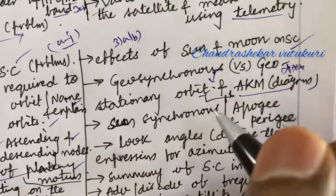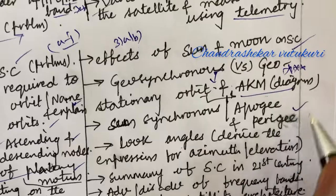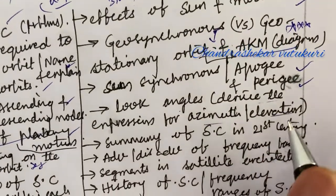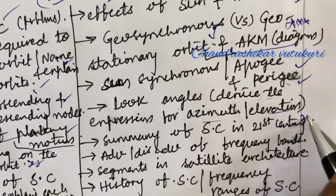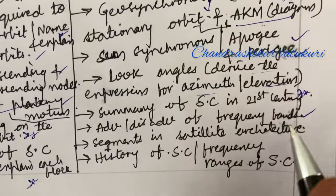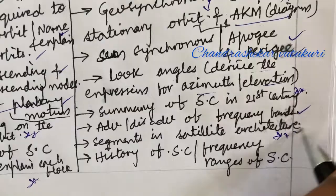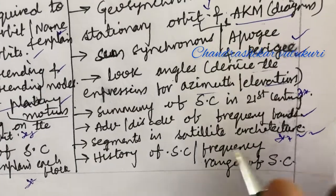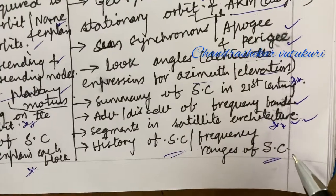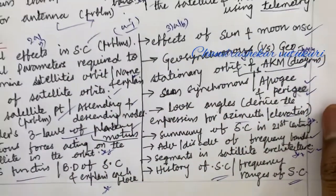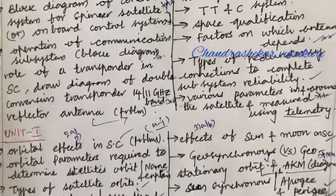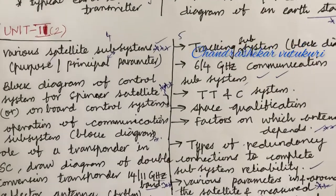Effects of sun and moon on satellite communication, geosynchronous and geostationary orbit with AKM diagram and their differences — set as very important with one short question. Sun-synchronous orbit, apogee and perigee — their types and differences. Look angles and derive the expression for azimuth and elevation angles. Summary of satellite communication in the 21st century — such general questions on advantages and disadvantages of frequency bands and segments in satellite architecture are set as top questions with diagrams. History of satellite communication and frequency ranges of satellite communication may be short questions. These are important short questions covered for the course Satellite Communications for Electronics and Communication Engineering under JNTU H for R18 as well as other regulation systems.